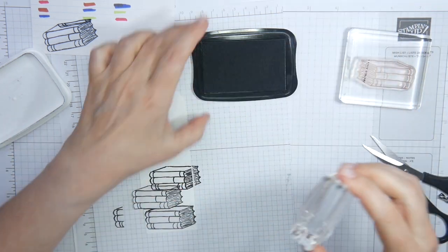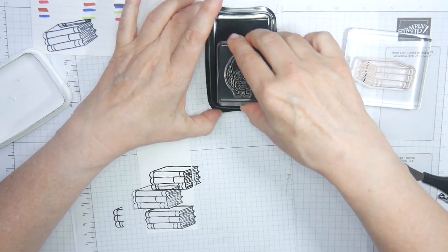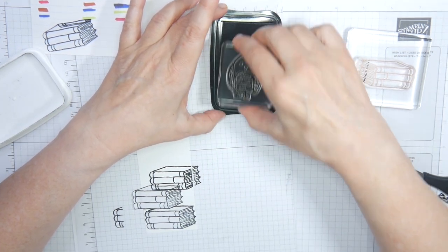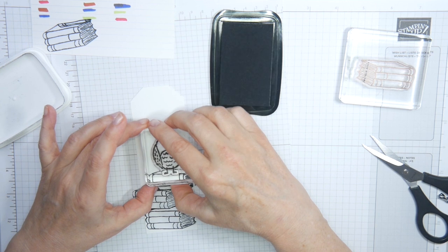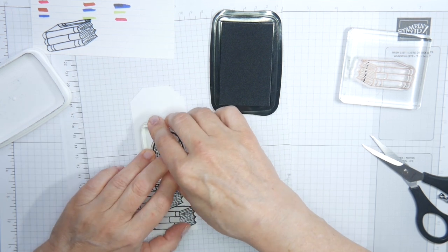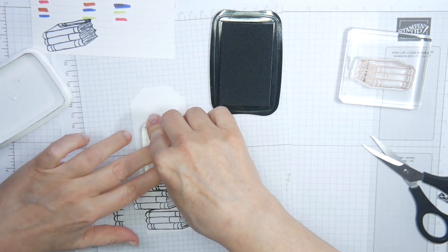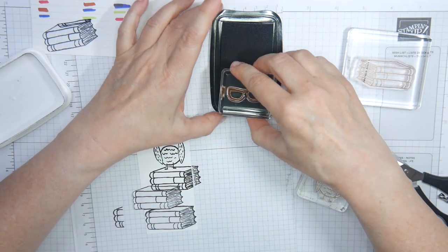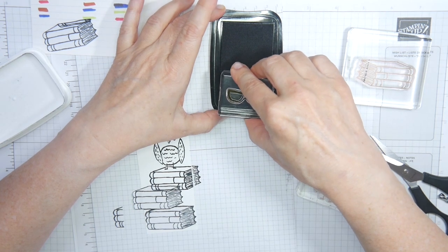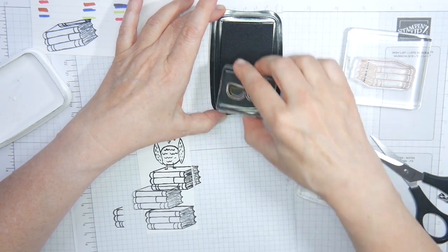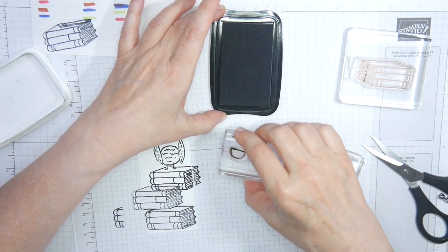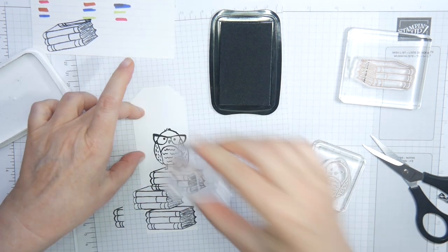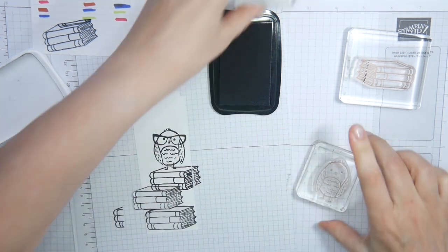Then I'm going to stamp the bird. I'm checking. This is a photopolymer stamp. So it's easy to see whether there's enough ink on my stamp. And give the ink time to transfer to the paper and the glasses as well. Again, I'm checking if there's plenty of ink on the stamp. And then give the little bird some reading glasses. Cleaning my stamps.